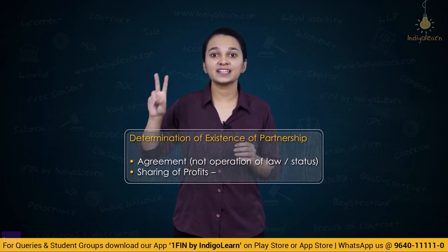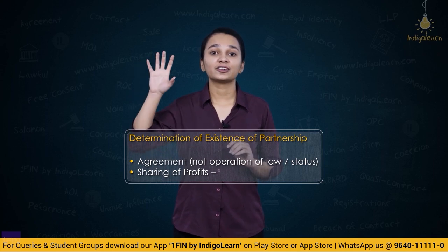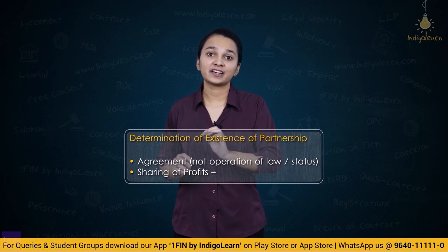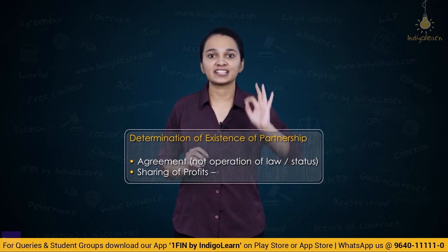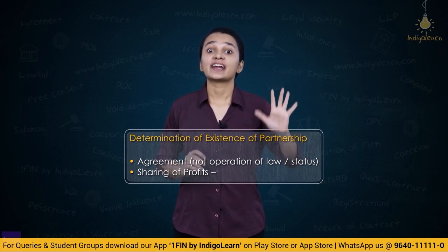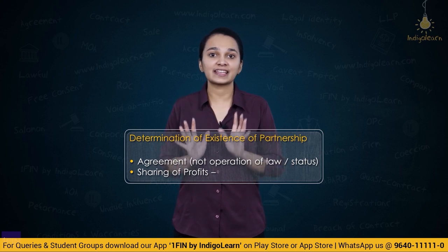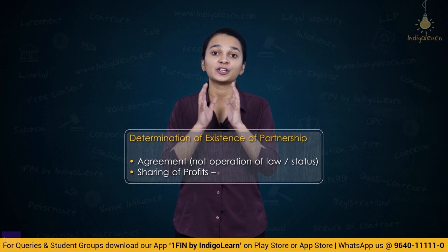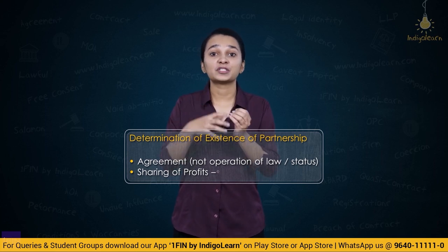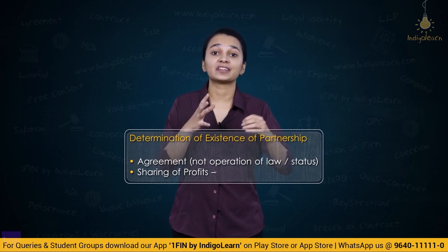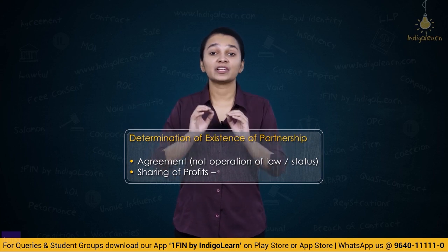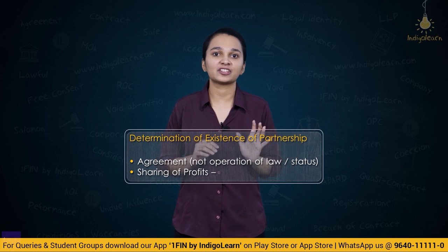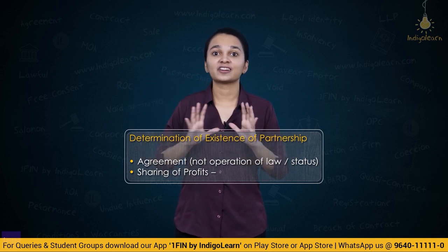To determine whether partnership exists or not, the three most important things are agreement, sharing of profit, and mutual agency — this is called the true test of partnership. Partnership is a result of agreement and does not come into existence by operation of law. We look at the real intention of the parties. Sharing of profits with a widow of a deceased partner or with an employee will not make them partners. Finally, mutual agency — the cardinal principle of partnership — is that every partner acts as both principal and agent.